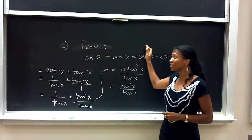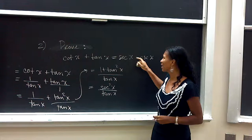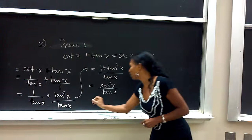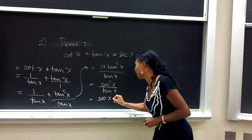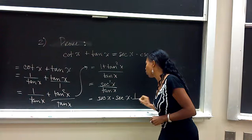Now remember, we're trying to prove the right side of the equation. The right side of the equation has secant x times cosecant x. So this is what we can do. We can break this apart as secant x times secant x times 1 over tangent x.